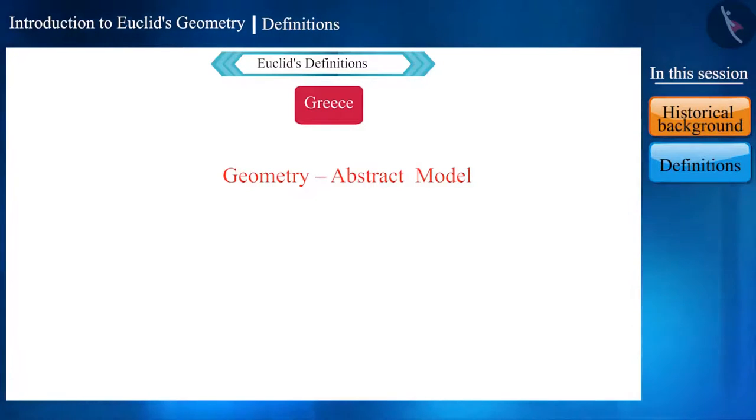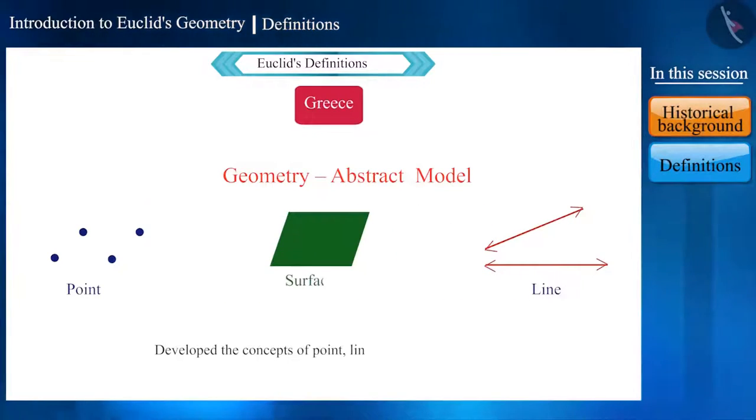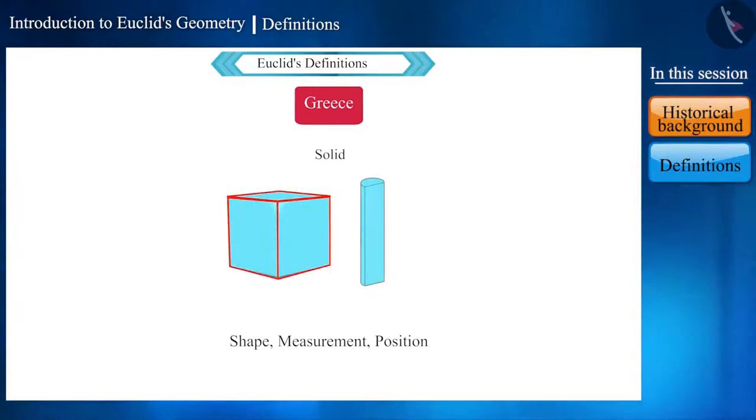All the Greek mathematicians of that time considered geometry as the abstract model of the world in which they lived. And by looking at things around them, they developed the concepts of point, line and plane. They also developed some concepts from the study of solid objects. For example, solid objects have shape, measurement and position and they can be transported from one place to another.